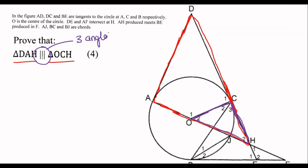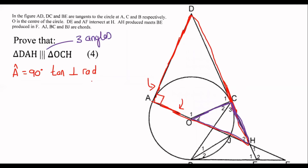To prove similarity we need three angles — that's what similarity is. This angle over here is 90 degrees. Angle A equals 90 degrees because it's a tangent touching a radius — the tangent is always perpendicular to the radius. We can say the same thing in the purple triangle: angle C is also equal to 90 degrees, also because of tangent perpendicular to radius.